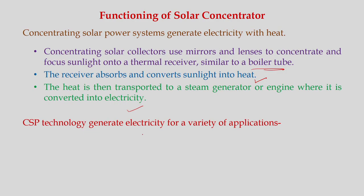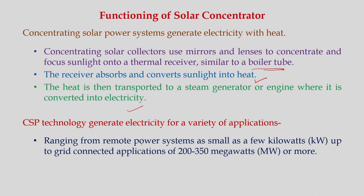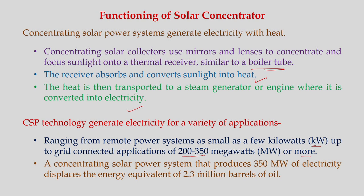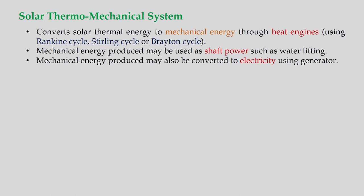CSP technology generates electricity for a variety of applications ranging from remote power systems as small as a few kilowatts up to grid-connected applications of 200 to 350 megawatts or more. A concentrating solar power system producing 350 MW displaces the energy equivalent of 2.3 million barrels of oil. Thermomechanical systems convert solar thermal energy to mechanical energy through a heat engine using the Rankine cycle, Stirling cycle, or Brayton cycle. This mechanical energy may be used as shaft power for water lifting, or converted to electricity using a generator.